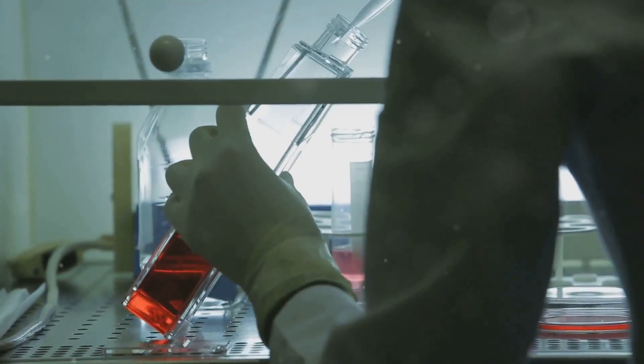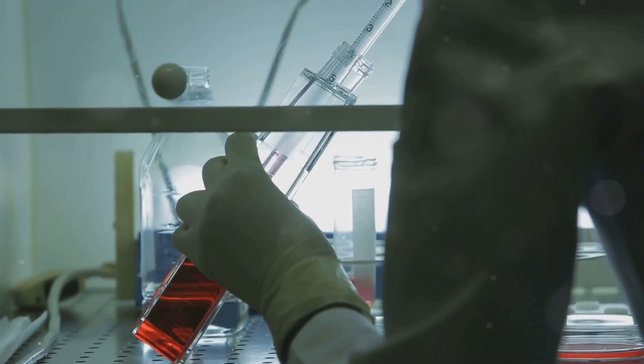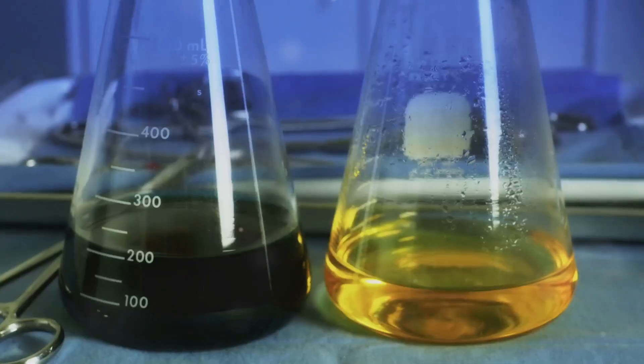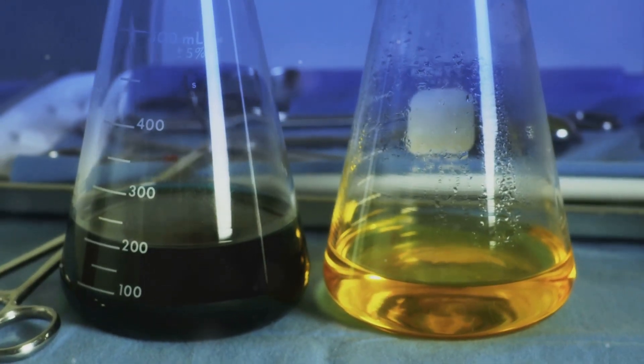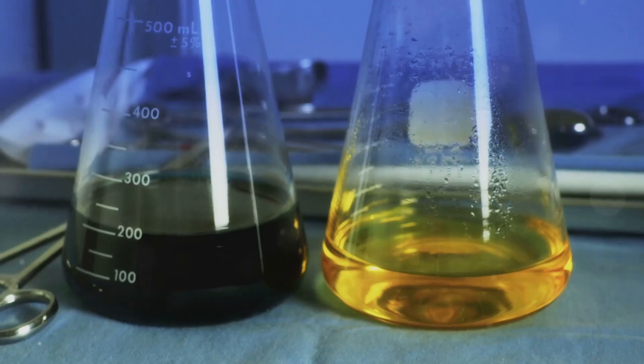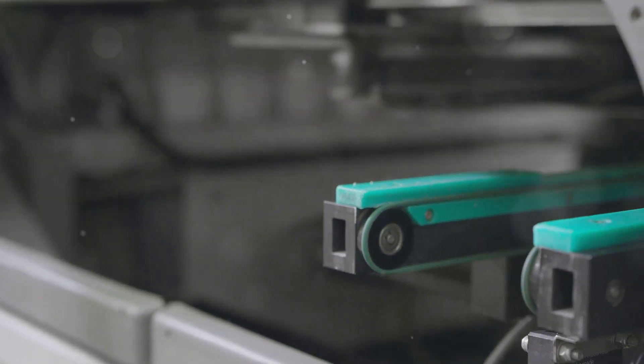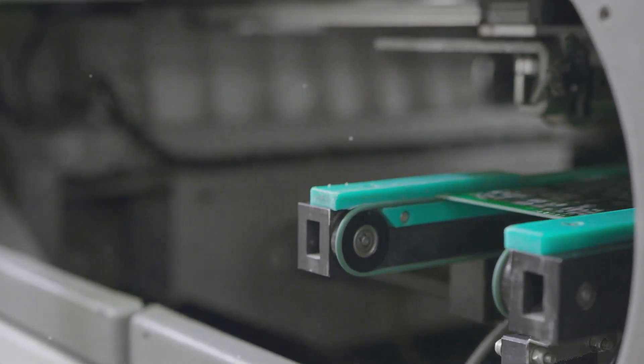Formic acid, on the other hand, is a slightly more corrosive liquid, but it boasts a higher energy density than methanol. It's naturally found in ant venom, hence the name, and can also be produced synthetically. Both methanol and formic acid offer a compelling combination of practicality and performance, making them well-suited for microfluidic fuel cells that power portable electronics, medical devices, and other applications where ease of use is key.